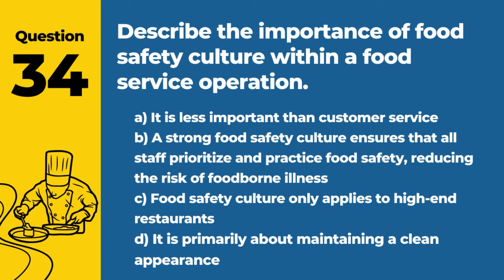Question 74. Discuss the role of active managerial control in a food safety management system. Answer: B. The proactive approach by management to identify and control food safety hazards. Active managerial control is key to a successful food safety management system, ensuring potential hazards are identified and mitigated before they become a problem.